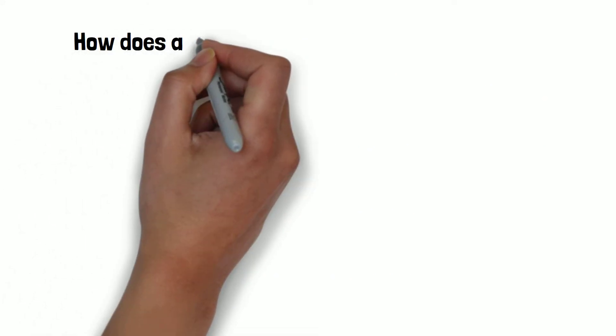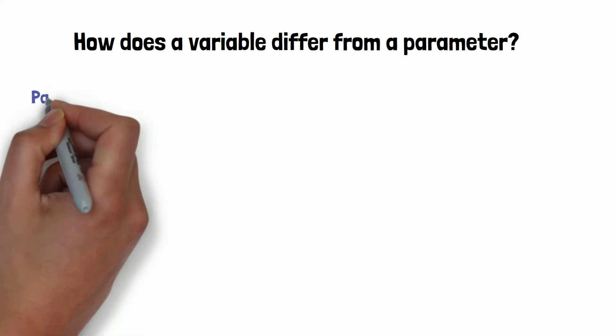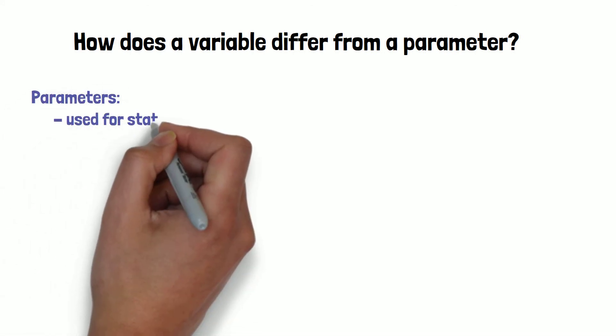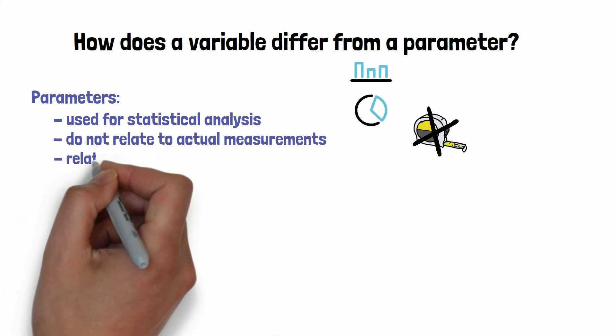Now that we know what a variable is, how does it differ from a parameter? Parameters are what biostatisticians use for statistical analysis. They do not relate to actual measurements but to quantities defining a theoretical model.